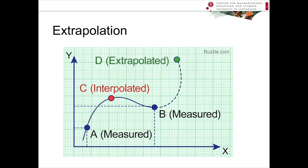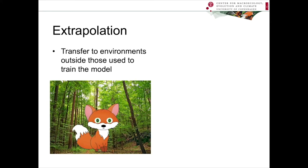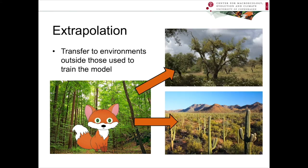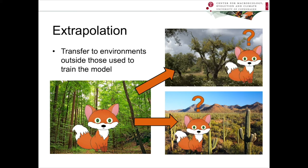Anything outside your series of measurements that is predicted by the model, we call extrapolation. The model is saying: based on the data you've given me, this is the likely response. In the case of ecological niche modeling specifically, extrapolation refers to the transfer to environments outside those that are used to train the model. For example, you might have a model for a fox trained in a temperate forest habitat. If you then ask the model to extrapolate into dry oak forest or the Sonoran desert, it's going to need to do some extrapolation to predict whether those environments would be potentially suitable for the fox.